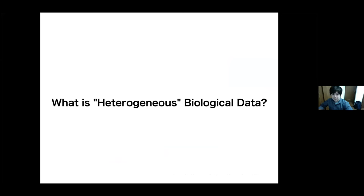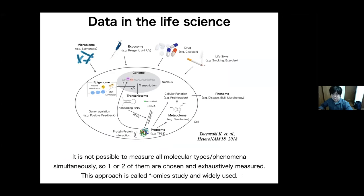Biological systems have a very complicated structure like this figure. For example, in the cell, DNA sequences are folded in several nucleus. RNA molecules are transcribed from the DNA. Proteins are translated from the RNAs. And finally, the proteins are related to several functions. Outside of the cell, there are also many signals like bacteria, infection, endochemical regulation, drugs, lifestyle, and so on. The change of these molecular types or phenomena finally causes phenotypes such as disease, BMI, and morphology. It is not possible to measure all molecular types or phenomena simultaneously. So one or two of them are chosen and exhaustively measured. This approach is called omics study and widely used.